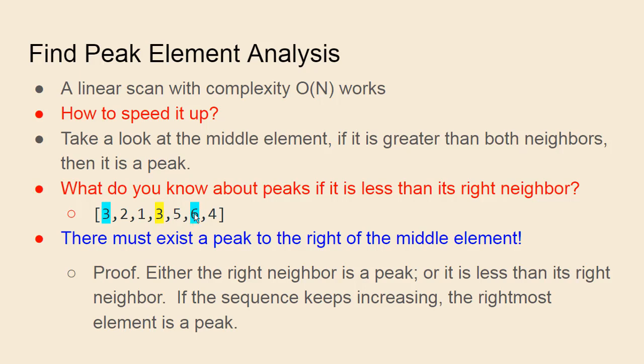Either that one is a peak, or it's less than the element to its right. Following this sequence, either one of the elements is the peak, or we will reach the end, and then the last element will be a peak. That is the proof that the peak must exist on the right half.